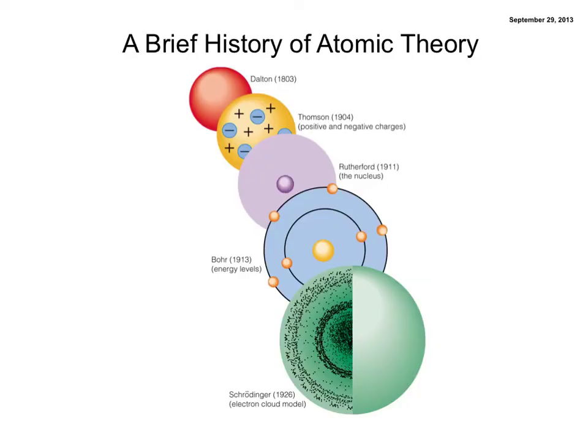Starting with Dalton, around 1800, his model of the atom was just like a sphere. It had no internal structure, no protons, no neutrons, no electrons. In fact, sometimes it's called the marble model.